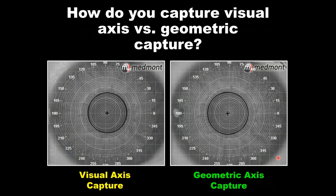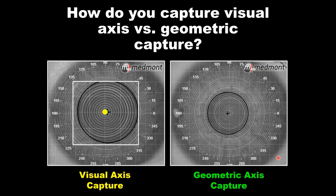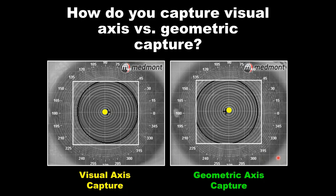How do you capture a visual axis capture? That's simply having the patient fixate right down the axis of the instrument, giving us an understanding of topography in relationship to the patient's line of sight. Whereas the geometric capture centers the placido so it's equally distributed on either side of the visible iris. To capture a geometric axis capture, you have the patient fixate possibly one, two, three, or four rings toward the nose, moving the placido more onto the geometric axis.